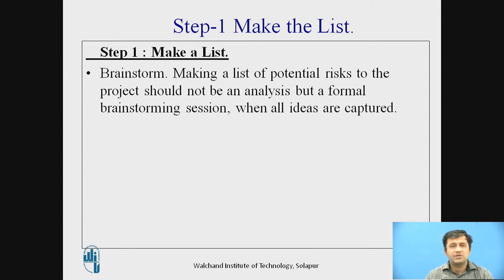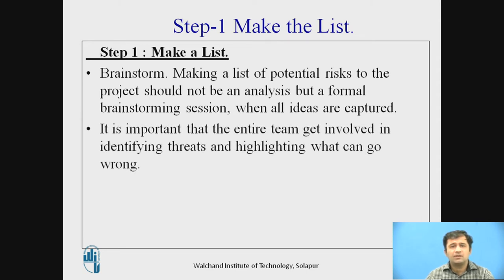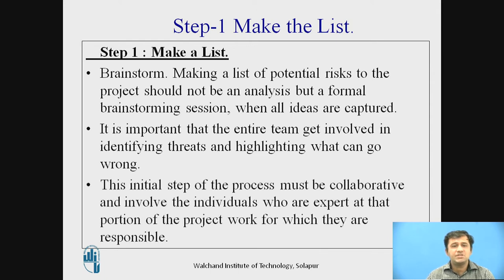There can be formal meetings where people come together from different places and all ideas are generated — what potential or probable risks are involved are captured or forecasted. Making a list of potential risks to a project should not be just an analysis, but a formal brainstorming session where all ideas are captured. It is important that the entire team gets involved in identifying threats and highlighting what can go wrong. This initial step must be collaborative and involve individuals who are experts at their portion of the project and the work they are responsible for.